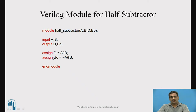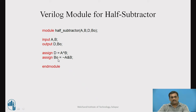In the next two lines we use the assign keyword. We assign the difference D equal to A XOR B, so the bitwise XOR operation between A and B is performed and assigned to D. Similarly, the borrow output BO is calculated as A-bar AND B, and this is assigned to BO. We end our module definition with the endmodule keyword.